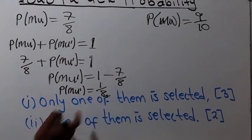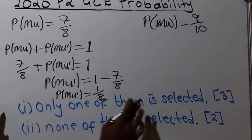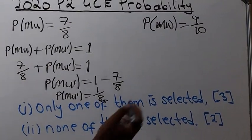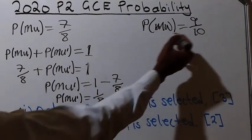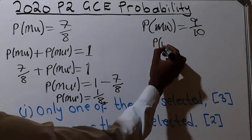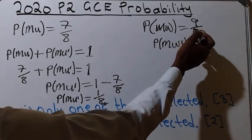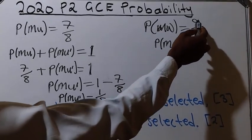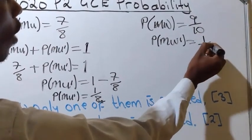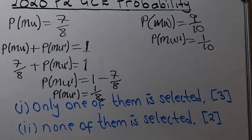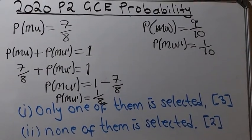Similarly, probability of not choosing Mwambi: we subtract 9 over 10 from 1, and we get 1 over 10. So the probability of not choosing Mwambi is 1 over 10.